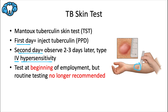A certain size of induration means a positive result — your body has been infected with TB — and additional tests are needed to determine if it's active or latent. A negative result means neither active nor latent infection. One exception: having received the BCG vaccine may lead to a false positive, producing a large induration even though you've never actually been infected with TB.